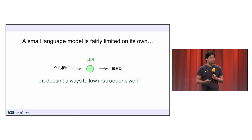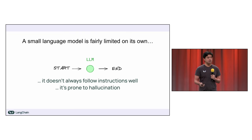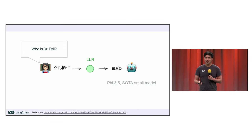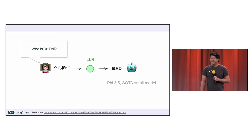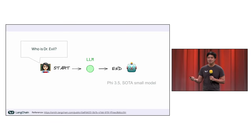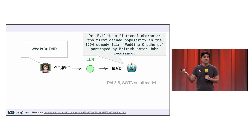Another limitation is that small models can be prone to hallucination. If I ask a simple question — same model, Phi 3.5 — who is Dr. Evil? He's a character from the movie Austin Powers, a funny villain-type character. But I asked Phi 3.5 this and Phi did not know the answer.